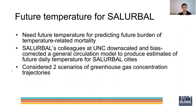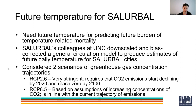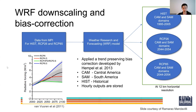Our colleagues considered representative concentration pathway 2.6 (RCP 2.6), which is a very stringent scenario that requires CO2 emissions to start declining by 2020 and reach zero by the end of the century. The other scenario is RCP 8.5, which is based on assumptions of increasing concentrations of CO2, in line with the current trajectory of emissions. Using the global circulation model and these two representative concentration pathways, our colleagues downscaled the global circulation model from the global scale to the Latin American region. They also applied a bias correction technique to ensure that the projected temperature data preserved the trend observed in the historical data.